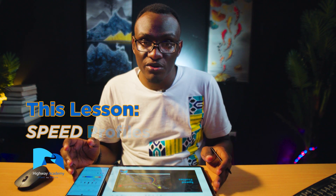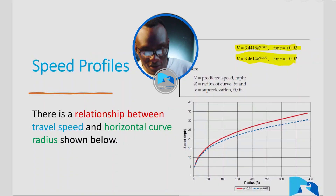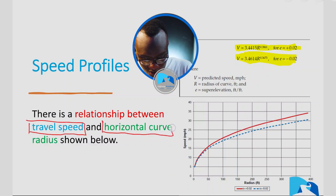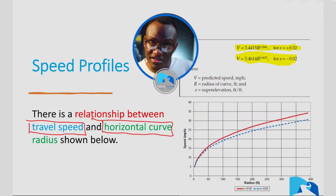Welcome to the next lesson. We are going to be talking about speed profiles. As mentioned in most of the earlier classes, there is a relationship between the travel speed and the horizontal curve, as shown in this relationship. As the radius increases, the speed increases. A number of studies were done to establish this relationship, and most of the time they were using normal passenger cars.